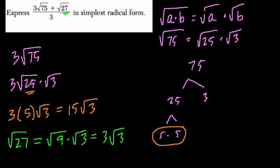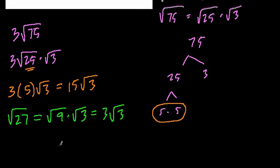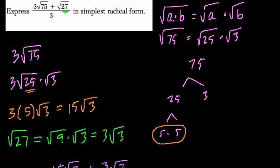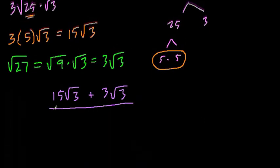And now if we rewrite this fraction, look what happens. We have 15 radical 3, that was radical 75, plus 3 radical 3, that's our numerator, all over 3. So I'm going to solve the numerator first.